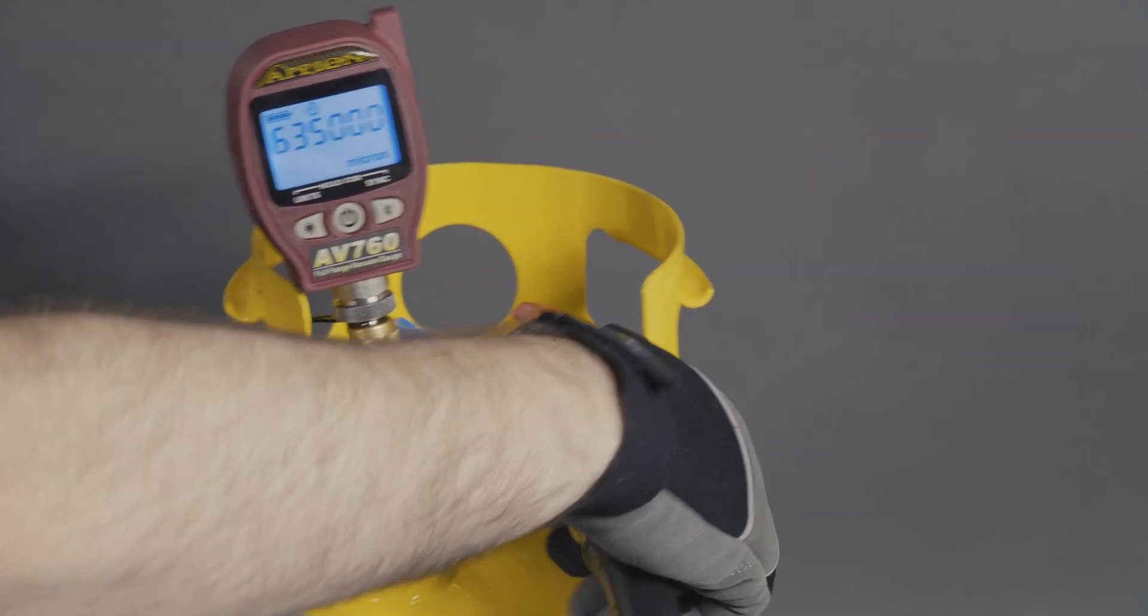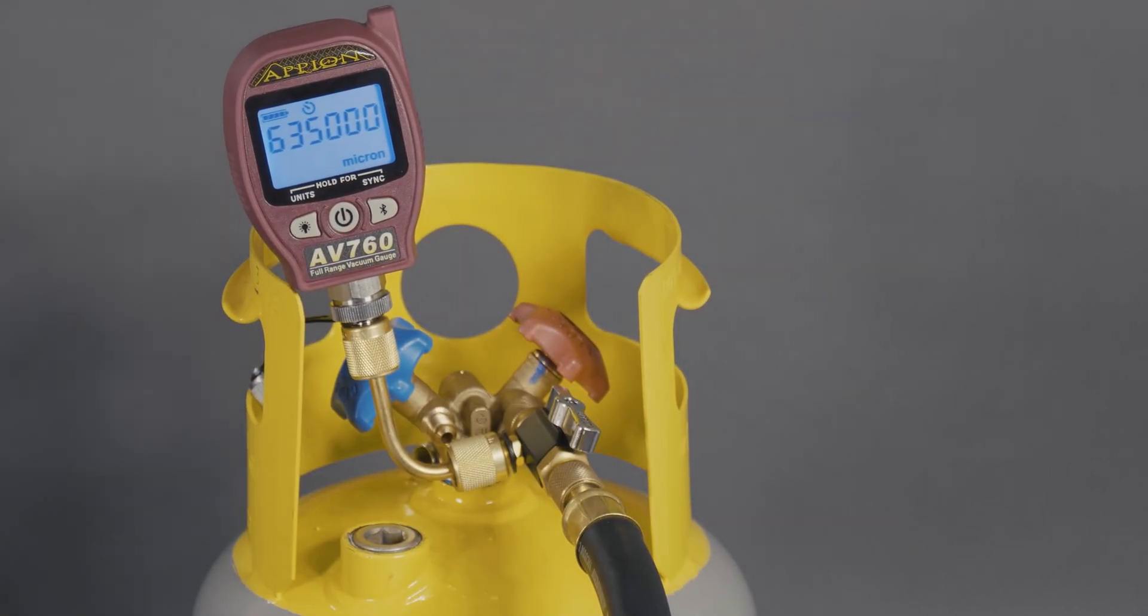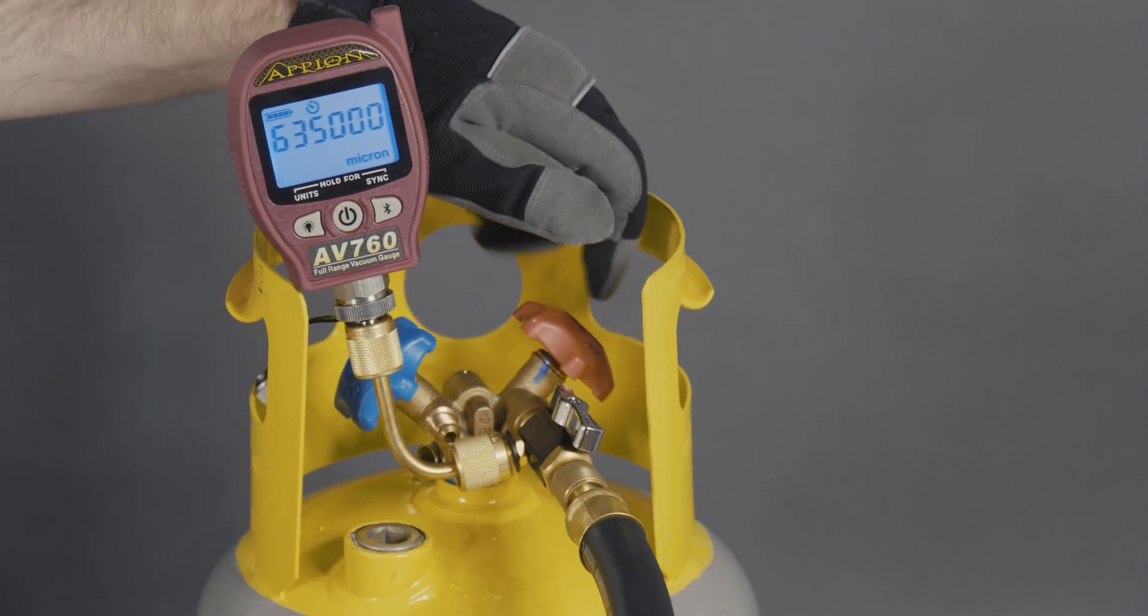Then attach a vacuum hose to the main through port of the tool. Open the valve and turn the pump on.